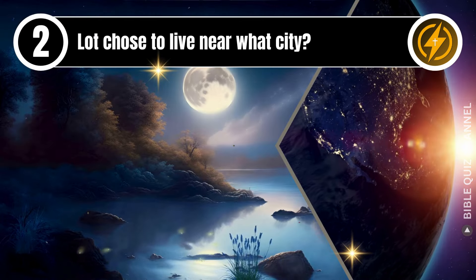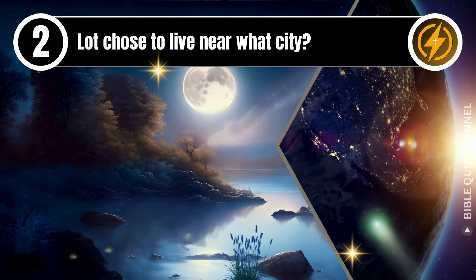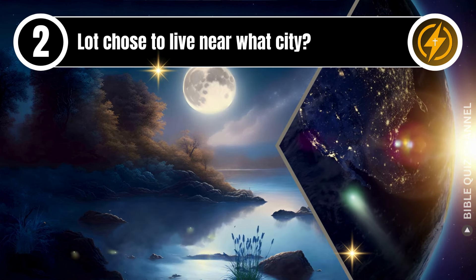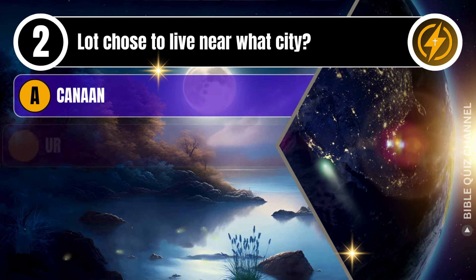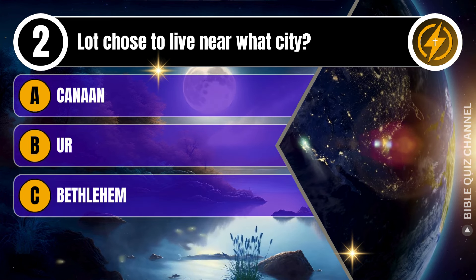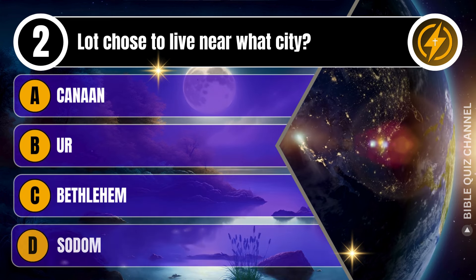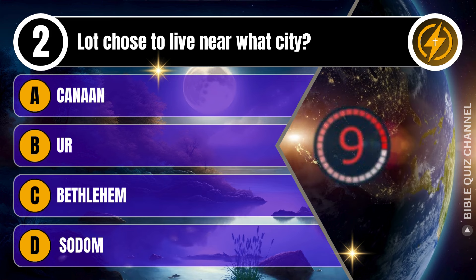Question 2. Lot chose to live near what city? A. Canaan. B. Mer. C. Bethlehem. D. Sodom. You get 10 seconds.